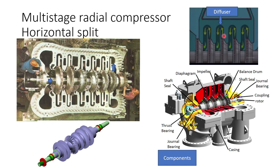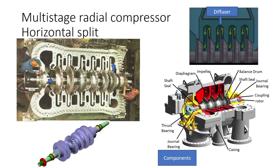The diffuser also serves as a guide to direct the gas to the inlet of the next impeller. On the right-hand side top, you can see the gas leaving the diffuser, taking a U-turn, and entering at the eye of the next stage impeller. The various components visible include: the casing, rotor shaft, impellers, thrust bearing, diaphragm, balance drum, bearings on both sides, and the coupling.